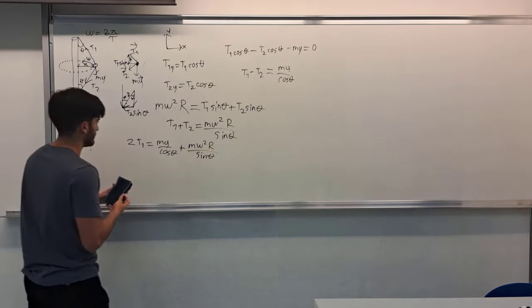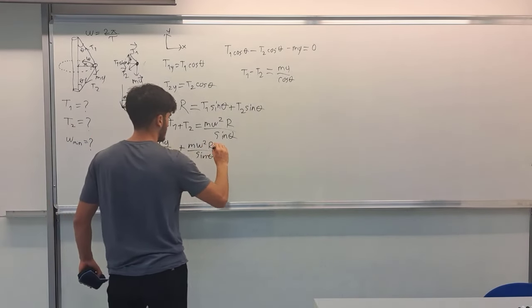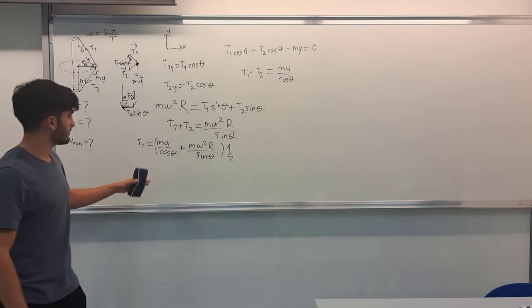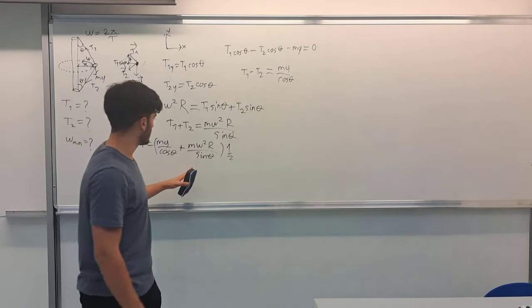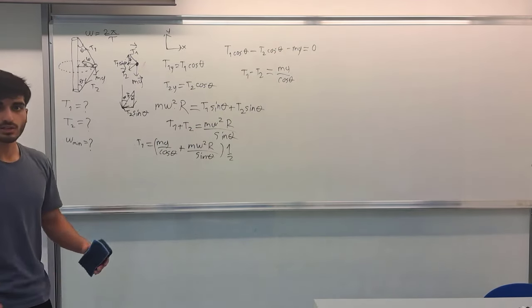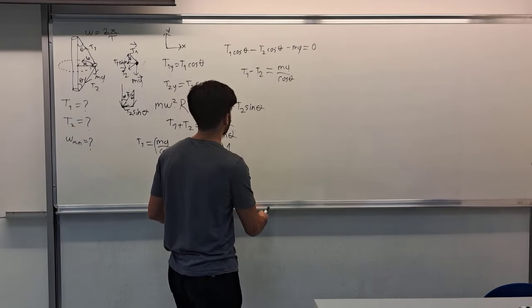And then I take this to the right side, this two coefficient, it should be 1 over 2 times this. So when I find T1, also, I can substitute this T1 to another equation that I want, and I can obtain the T2 as well. So let's see what is T2.